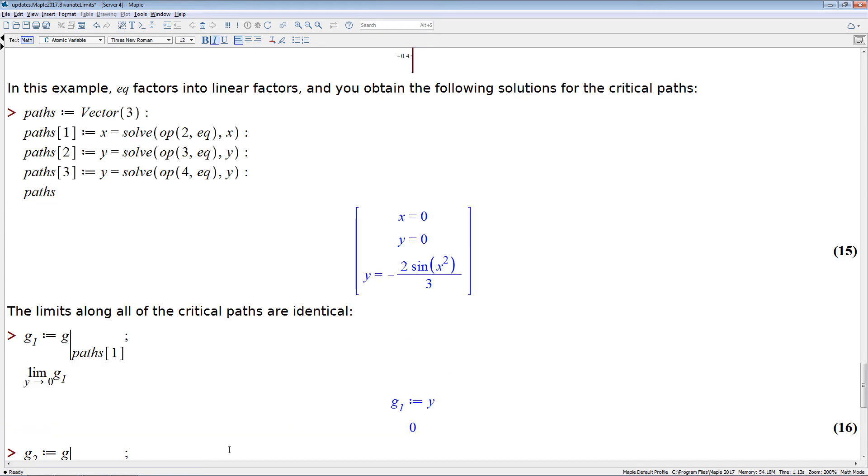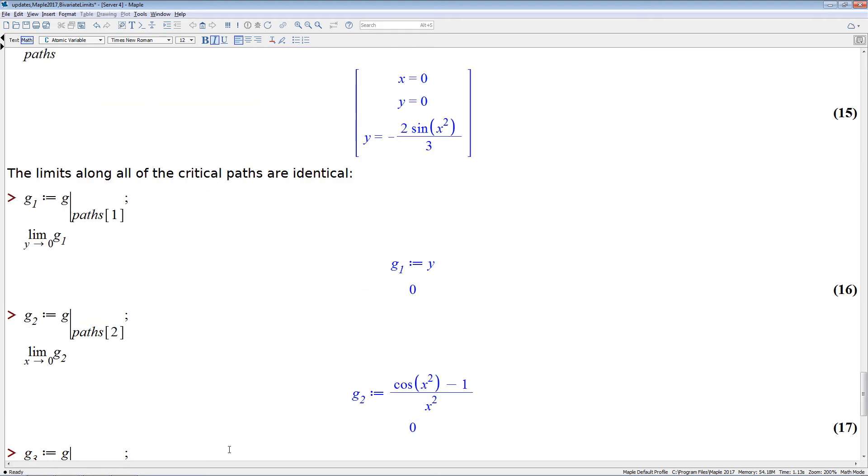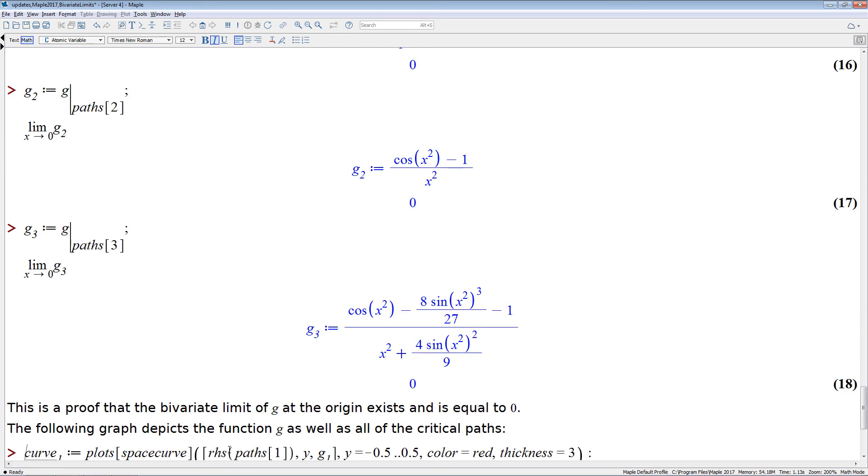And now we compute the limits along those critical curves. So for x equals 0, the limit is, the function just simplifies to y, and the limit is 0. For the second one, which is y equals 0, the function simplifies to this, and we take the limit for x goes to 0, and it's also 0. And the third one is the nonlinear curve, which also gives us a univariate function, but again the limit is 0.